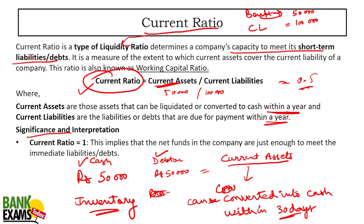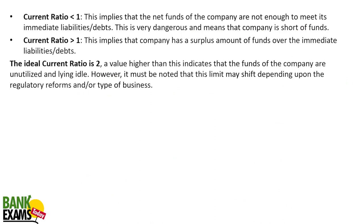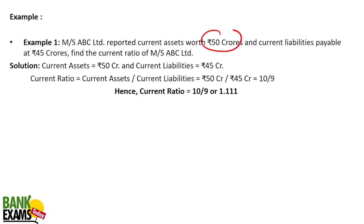If your current assets were 5 lakh rupees, your current ratio would be 5 — a very good situation. A ratio of 1 means you have just enough funds to meet your requirements. The ideal current ratio is anything above 1, with 1 to 2 being ideal. If you have too much in current assets — say a ratio of 10 — that means you are not utilizing your funds, which is also not good.